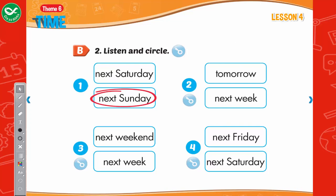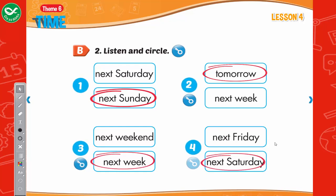Listen and circle. 2. What are you going to do, Lucy? I'm going to tell all of his friends tomorrow. 3. What about you, Tom? I'm going to buy his present next week. 4. And are you going to make the cake, Anne? Of course. I'm going to make his favorite strawberry cake next Saturday. It's going to be so much fun! Next Sunday.